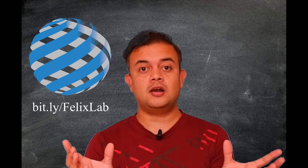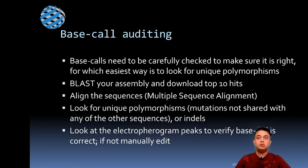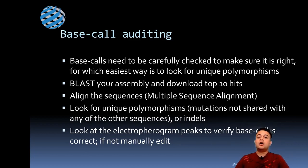This video will also introduce two concepts: global versus local alignment — what is the difference — and how to perform the BLAST search and its variants. The base call needs to be carefully checked to make sure it is free of problems or ambiguities. The best and easiest way is to look for unique polymorphisms found only in your sequence, not in related sequences. To do that, the best option is to do a BLAST search.